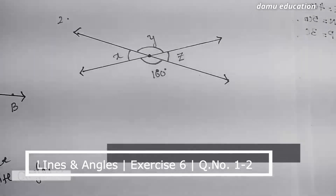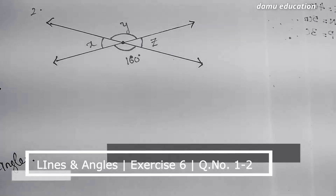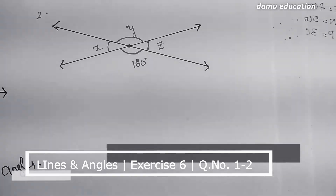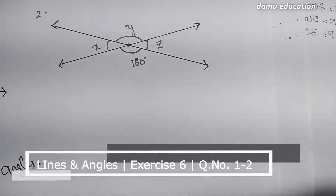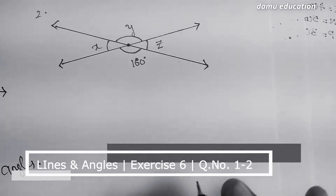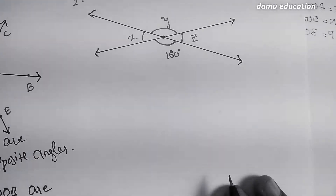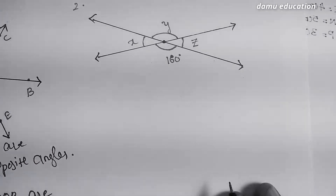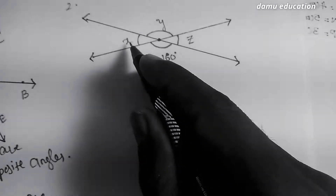Our next question is: find X, Y, and Z in the given figure. To find these, we first need to think about vertically opposite angles. Here, X is equal to Y.